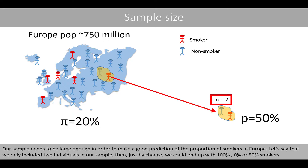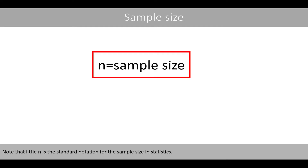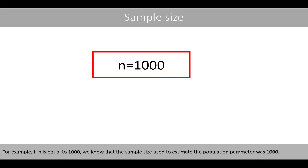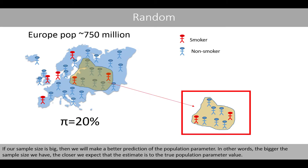Let's say that we only included two individuals in our sample. Then, just by chance, we could end up with 100%, 0%, or 50% smokers. Note that little n is the standard notation for the sample size in statistics. For example, if n is equal to 1,000, we know that the sample size used to estimate the population parameter was 1,000. If our sample size is big, then we will make a better prediction of the population parameter. In other words, the bigger the sample size we have, the closer we expect that the estimate is to the true population parameter value.